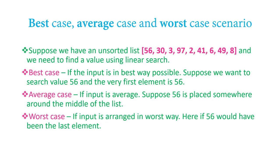One very important concept: best case, average case, and worst case. Suppose you have an unsorted list and you need to do a linear search. Best case means the input is arranged in the best possible way so that the running time is minimum. Here, if I search for 56 and 56 is the very first number in the list, that's the best case — the time complexity is Big O of 1, since you just access the first element.